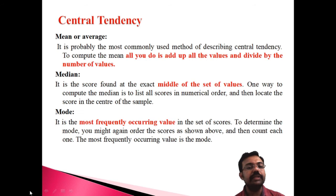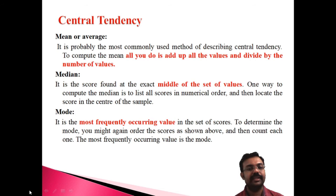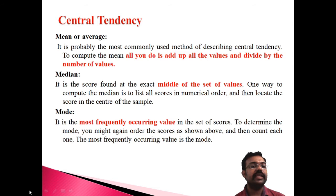One way to compute the median is to list the scores in numerical order — either ascending or descending order. By arranging the data in order, the middlemost item is identified, and that is known as the median.